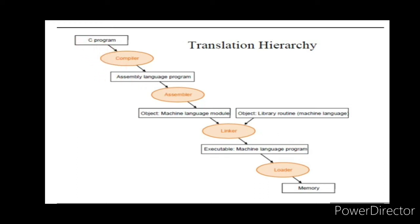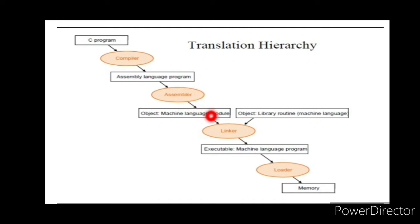If you type the C program and compile it, the object module goes into the library area. If you add the machine code to the program, then you can link the object files together. If you convert to machine language, you can produce a single program.